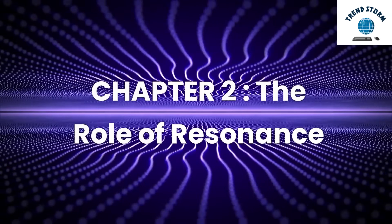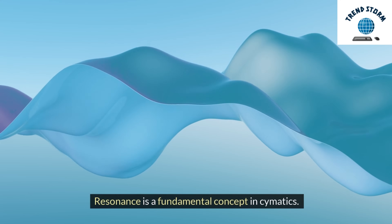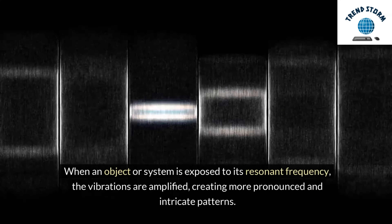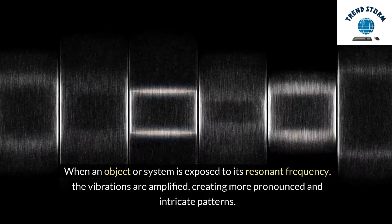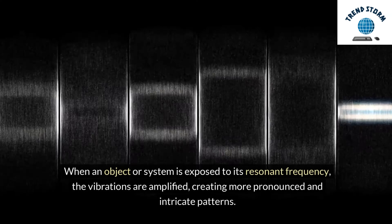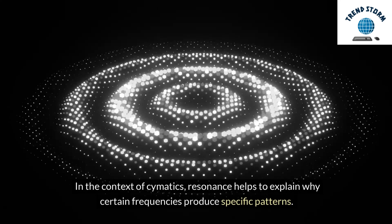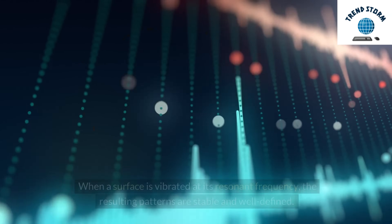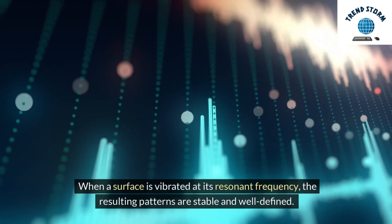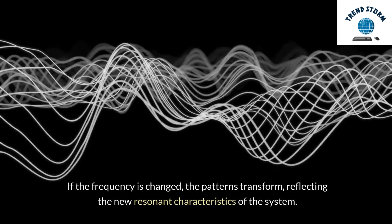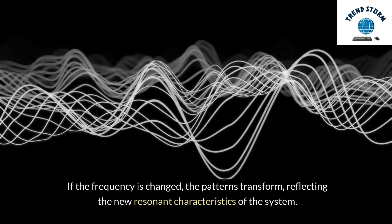Chapter 2: The Role of Resonance. Resonance is a fundamental concept in cymatics. It refers to the phenomenon where a system vibrates at maximum amplitude at certain frequencies, known as resonant frequencies. When an object or system is exposed to its resonant frequency, the vibrations are amplified, creating more pronounced and intricate patterns. In the context of cymatics, resonance helps to explain why certain frequencies produce specific patterns. When a surface is vibrated at its resonant frequency, the resulting patterns are stable and well-defined. If the frequency is changed, the patterns transform, reflecting the new resonant characteristics of the system.